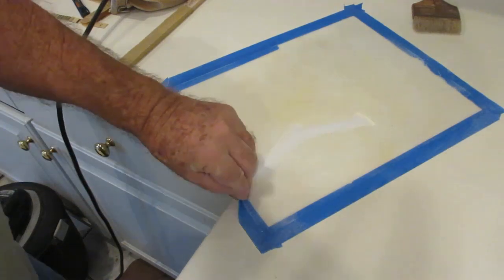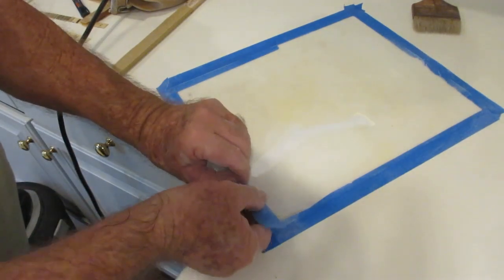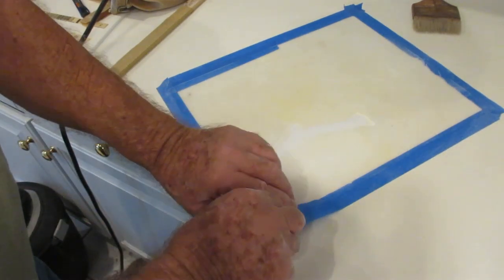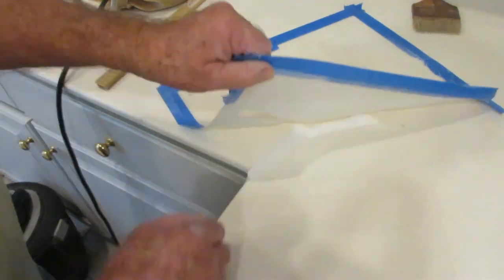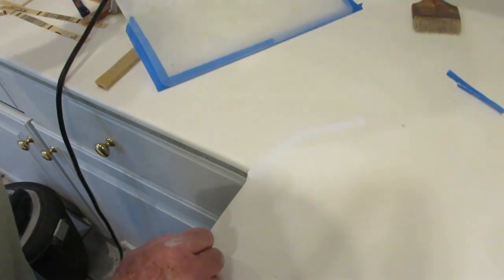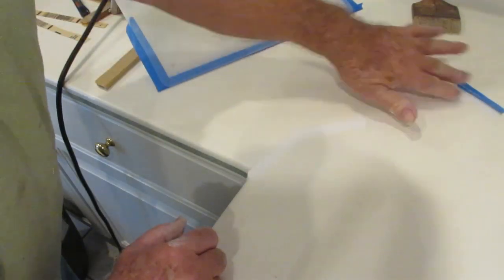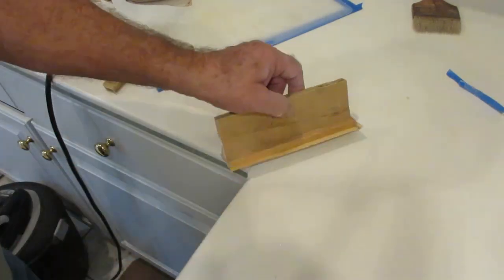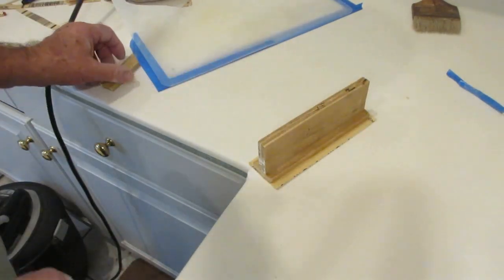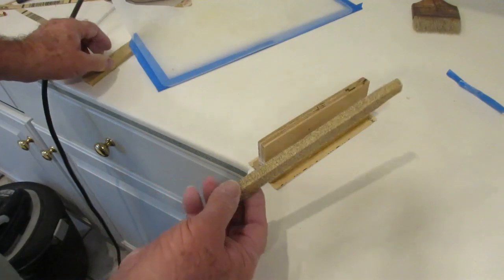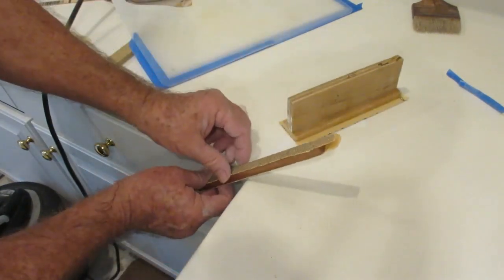I use 60 grit then 100 grit, then 150, then 220, and then finer and finer as I need to. This allows you to be more specific where you sand rather than a big sander sanding the whole area.